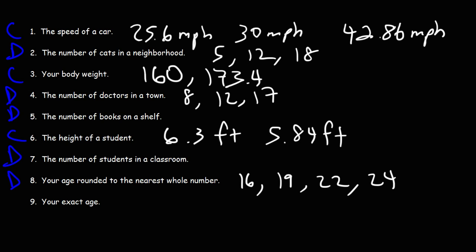For number nine, this is your exact age. John might be 16.2, the next person might be 19.3, the third person might be 21.76, and the last one might be 23.958 years old if you want to get the exact age. In this case, that can be measured, not counted, so this would be a continuous set of data.